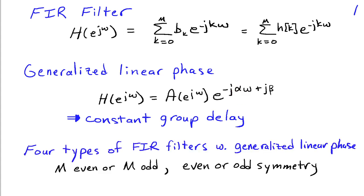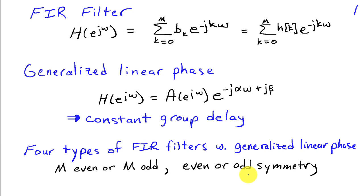There are four types of FIR filters with generalized linear phase. It turns out we can have M, the order of the filter, either be an even or an odd number, and then we can have either even or odd symmetry about the midpoint of H. We'll look at those four cases.